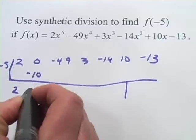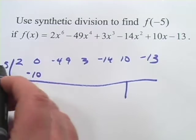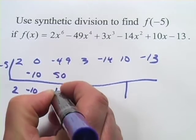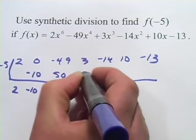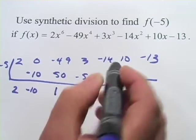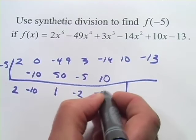This would be 2 times negative 5 is negative 10, so we'd get a negative 10 here. Times negative 5 would be a positive 50, and this would be 1. And 1 times negative 5 here, and that would be a negative 2. Times negative 5 would be a positive 10. That would make this a negative 4.